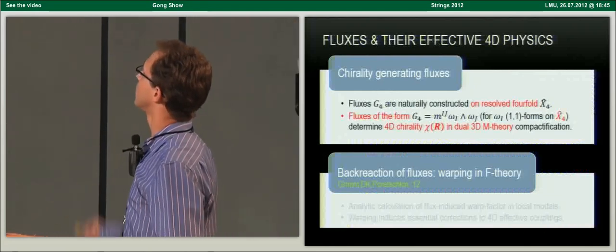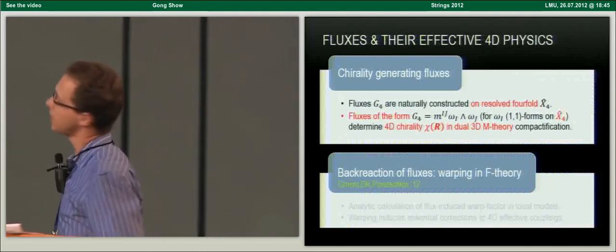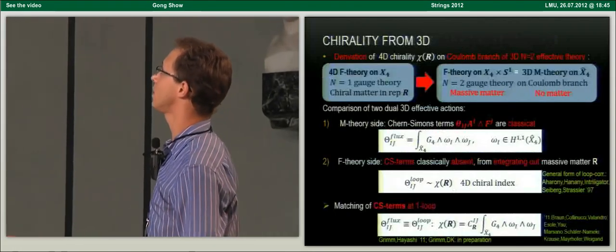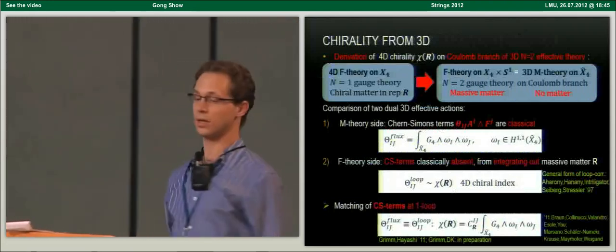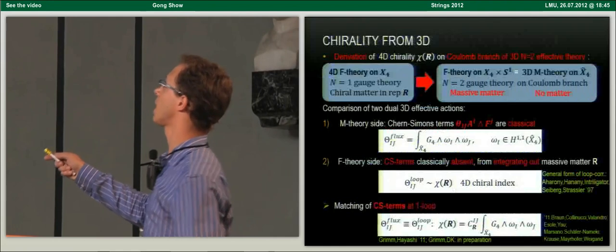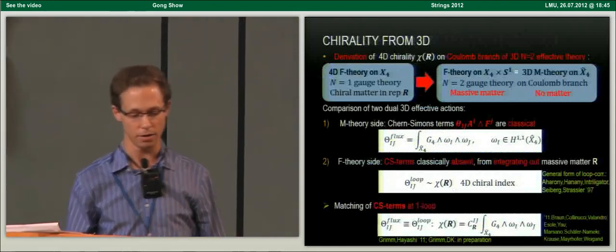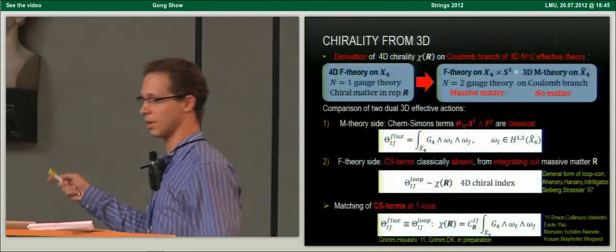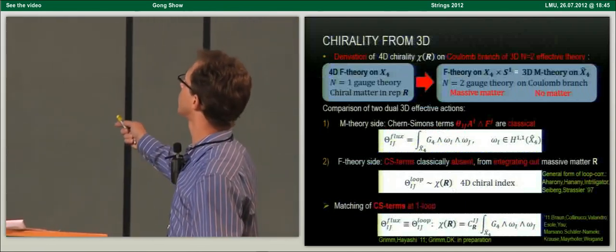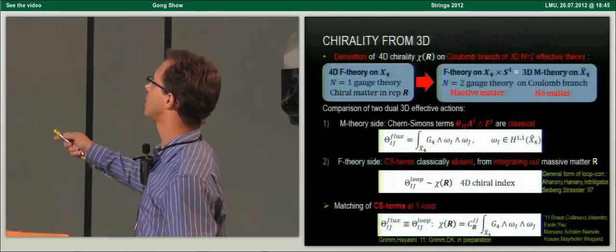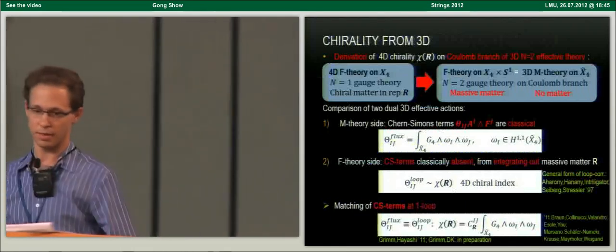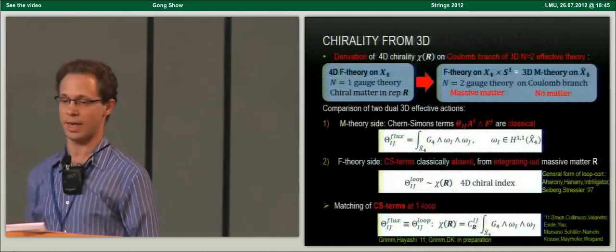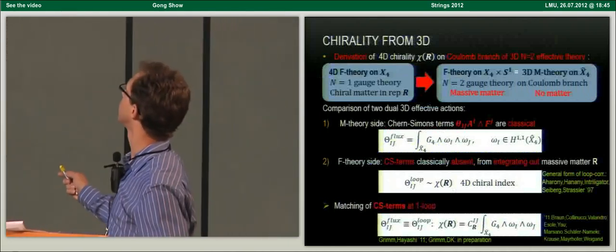The three-dimensional theory can be obtained by compactifying F-theory — meaning an N=1 gauge theory with chiral matter in a representation R of the gauge group — on an S1. We obtain an N=2 gauge theory in three dimensions, and on the Coulomb branch the originally massless matter becomes massive. In addition, we have a dual formulation as a three-dimensional compactification of M-theory on the smooth four-fold X4.